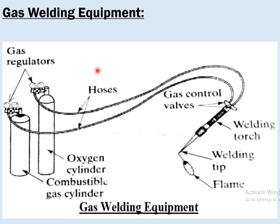Hello students, here is another topic from module 6: gas welding equipment. We can see the gas welding cylinders here. They are connected to flexible hoses with the help of gas regulators.